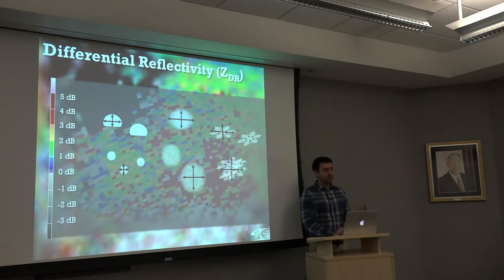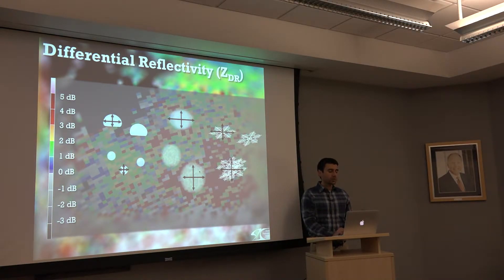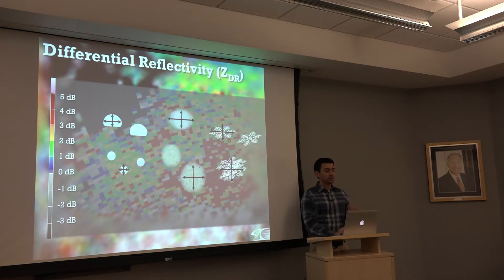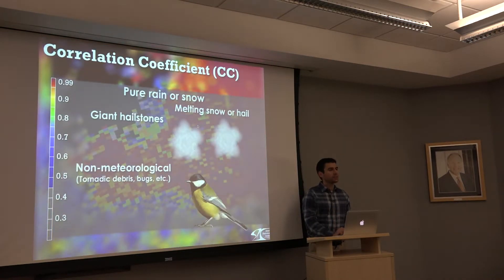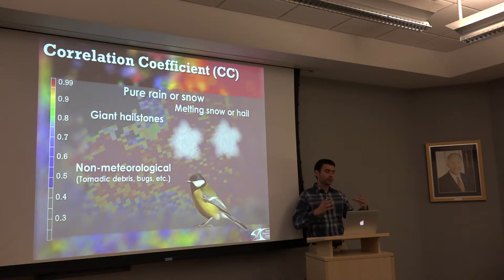Going forward, we take one more look at differential reflectivity, stressing what it means: a comparison of how much power we received in the horizontal versus the vertical. Things that are spherical, like a hailstone, will have ZDR close to 0 dB. Correlation coefficient tells us how pure our radar sample is — giant hailstones with weird lobed shapes can drive correlation coefficient down to 0.8 or even 0.7.